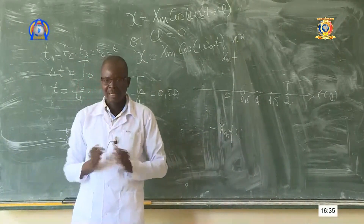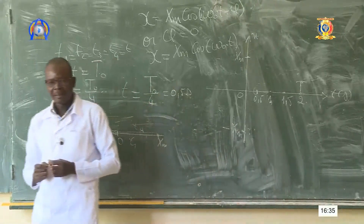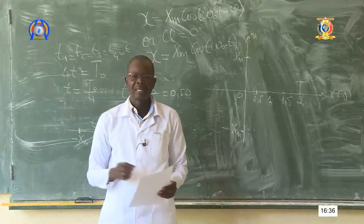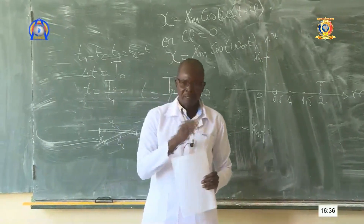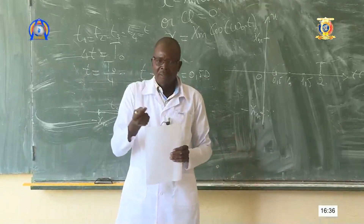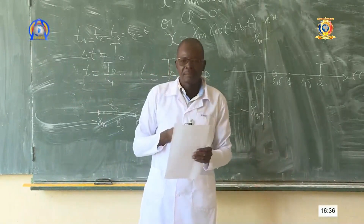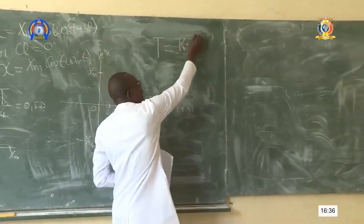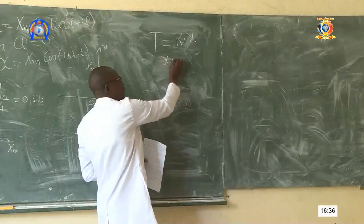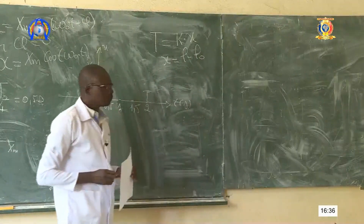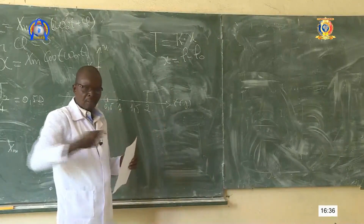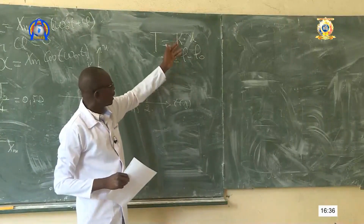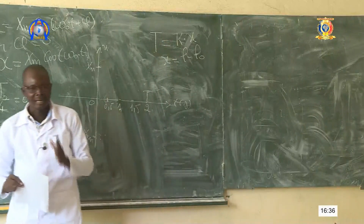Il faut diviser la période par 4 pour avoir la première gradation. La deuxième question porte sur la tension T. La tension T est aussi appelée force de rappel du ressort — c'est la force qui tire le ressort vers sa position d'équilibre. Nous avons dit que T = K·X, avec X = L - L0, où L est la longueur du ressort étiré et L0 la longueur initiale. Donc T = K·X.